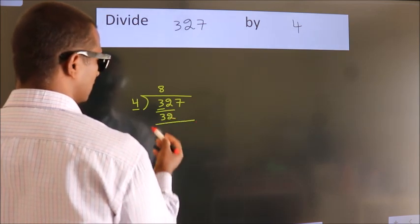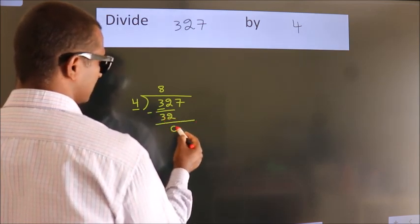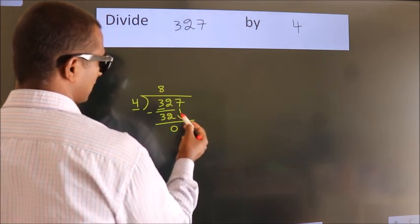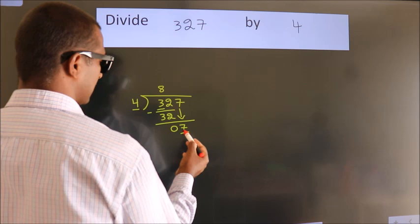Now we should subtract. We get 0. After this, bring down the beside number, so 7 down. So, 7.